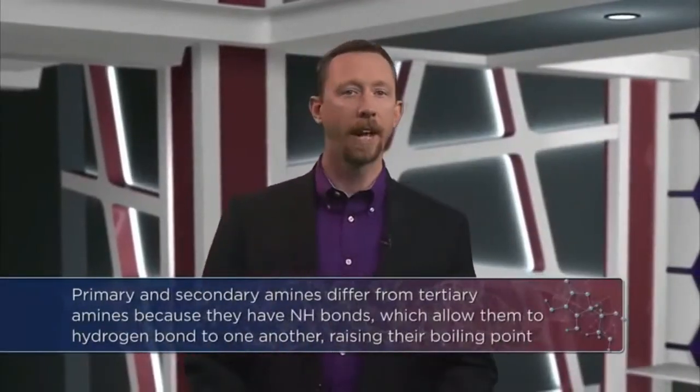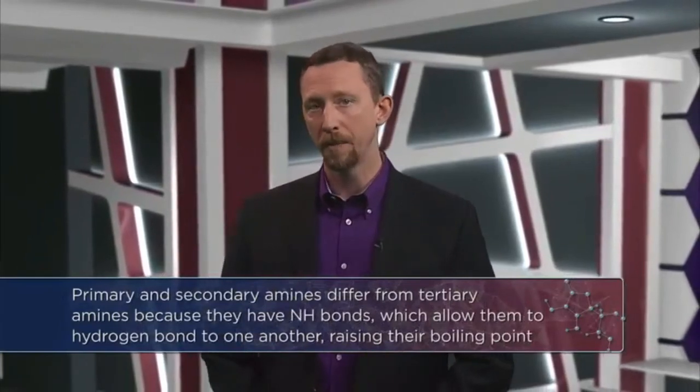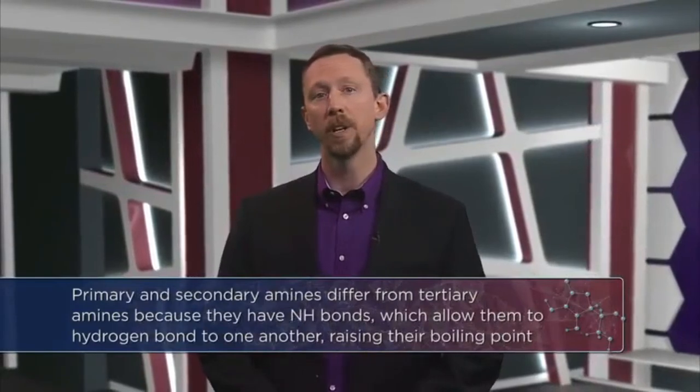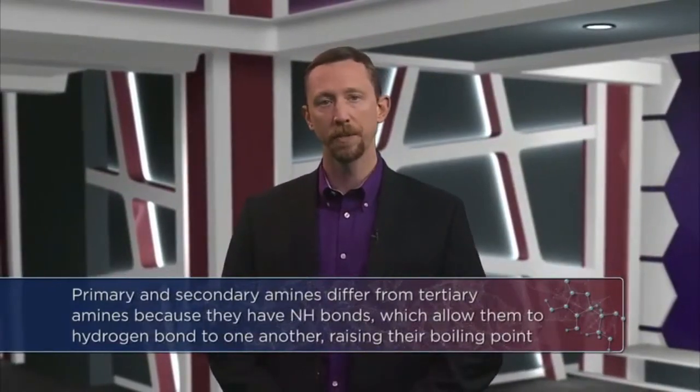Primary and secondary amines differ from tertiary amines because they have NH bonds, which allow them to hydrogen bond to one another, raising their boiling points. For example, the primary amine propylamine has a boiling point of about 50 degrees centigrade. Whereas trimethylamine, a tertiary amine, has a boiling point of just 2.9 degrees centigrade. Same elemental composition, but very different volatility.